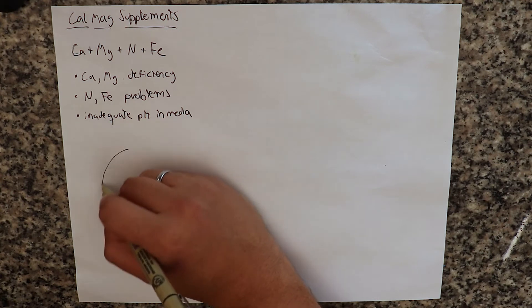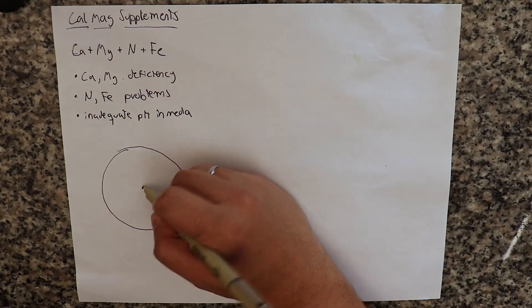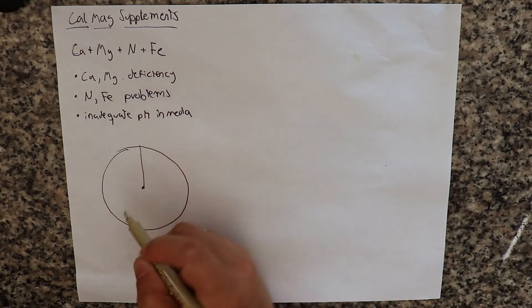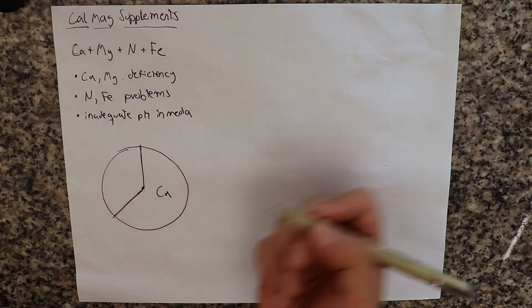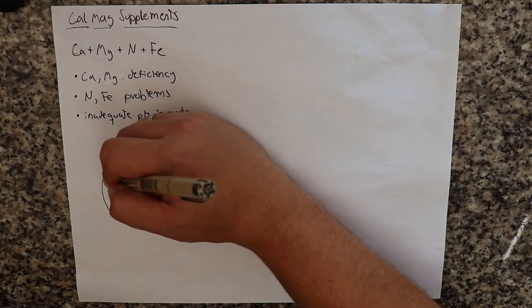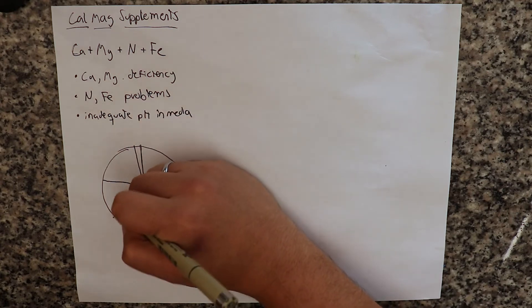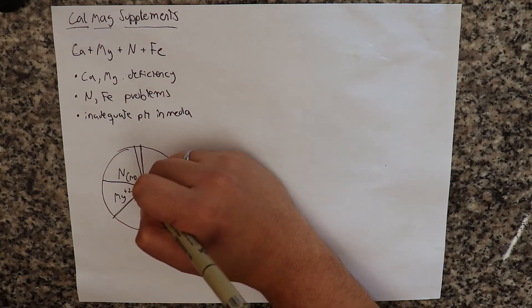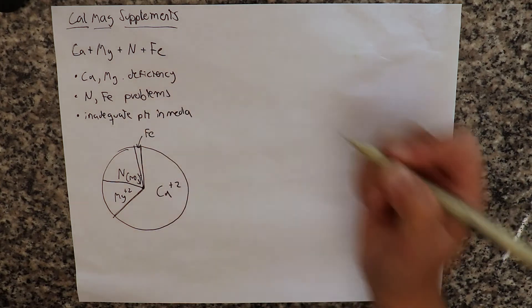So if we had a pie chart representing the composition of the CalMag supplement, we would see that the majority of this composition will be calcium. A lot of this will be calcium, then we will have fairly equally divided magnesium and nitrogen, usually nitrogen present as nitrate. And we will have this small sliver, which will be iron.